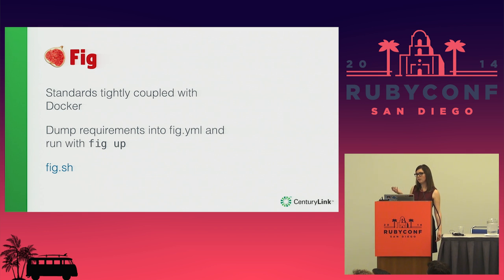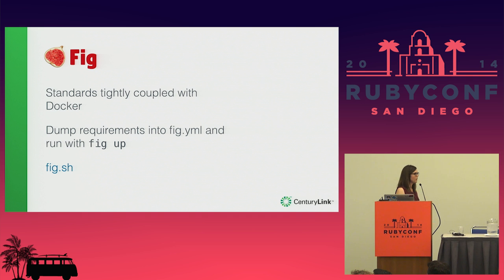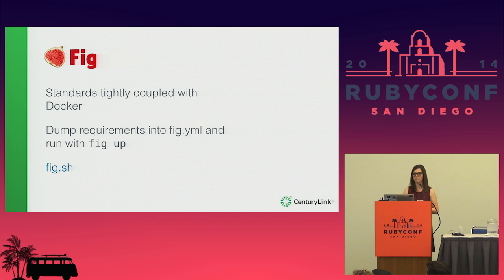A popular one is fig. This is actually a part of Docker proper now — it used to be its own thing and then Docker acquired it. That's great because fig standards are very tightly coupled with Docker standards. How it works: you dump your application requirements into a YAML file called fig.yaml and then run `fig up`, and your application is running. It's at fig.sh, and it's a proper Docker project maintained by the Docker community. It is command line only, though.